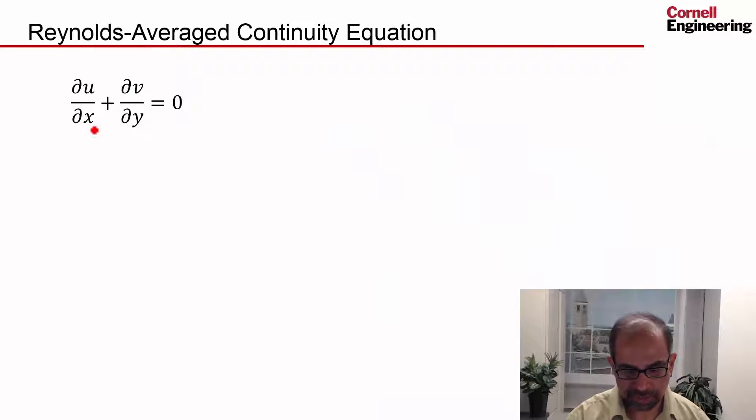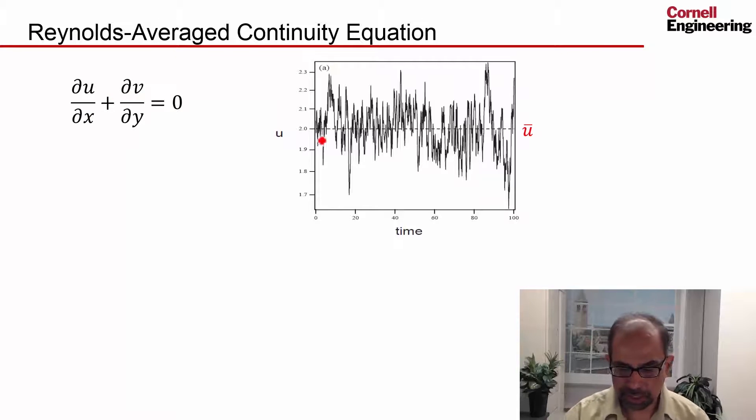The continuity equation is that, as we have seen before, written in the 2D Cartesian coordinates, x and y, and this applies to the fluctuating velocity.